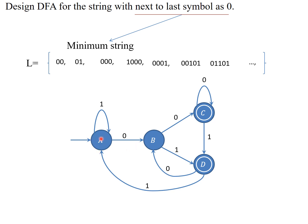State B again has transitions on zero and one. State C also has transitions on zero and one. State D also has transitions on zero and one. That means for every input zero and one, every state has a transition — so this is a complete DFA which accepts all strings where the next-to-last symbol is zero. Whatever possible string is given, it will satisfy the condition. I hope you understand this concept — see you in the next video, thank you.